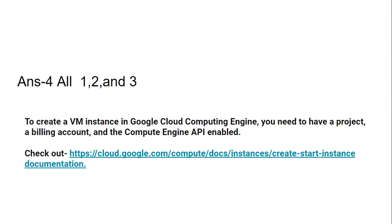To create a VM — virtual machine — instance in Google Cloud Compute Engine, you need a project to log into, a billing account which charges you for usage, and the Compute Engine API enabled. This applies to every service you use in Google Cloud; for example, if you want to use BigQuery or any other service, you must ensure that their API is enabled. A reference link will be put in the description box.